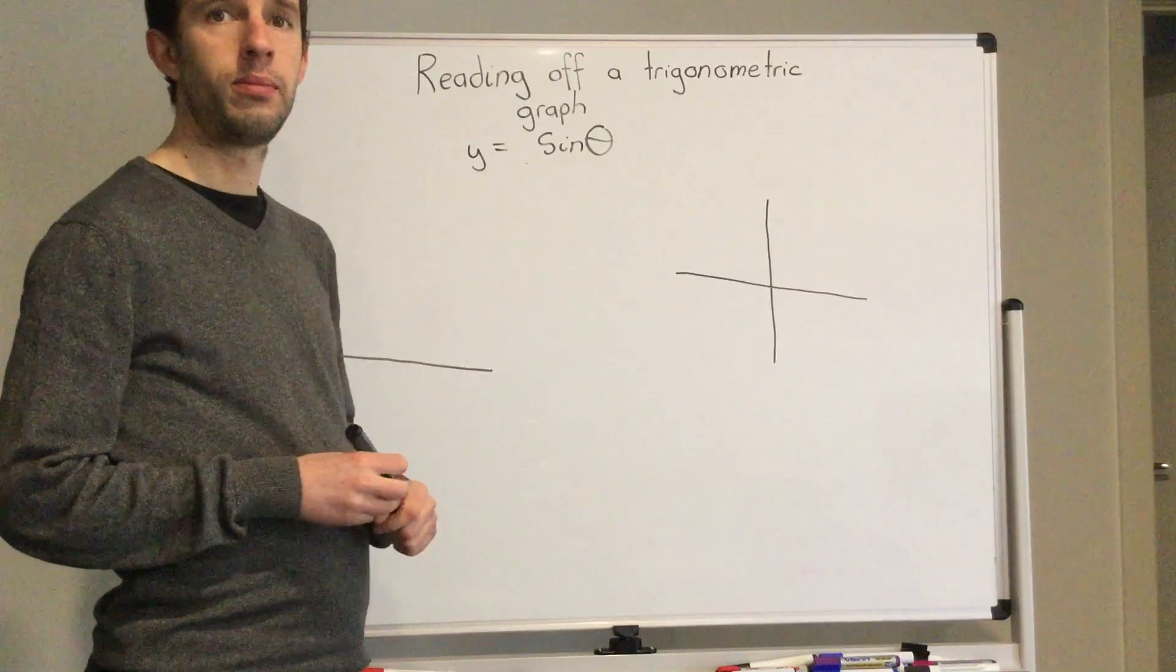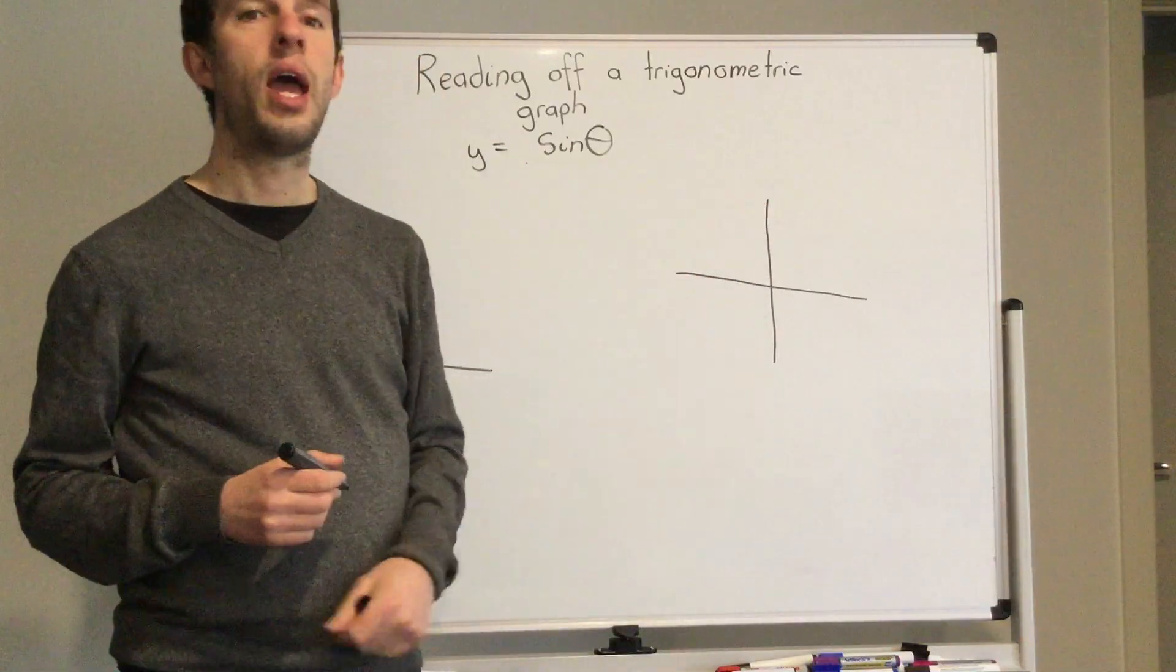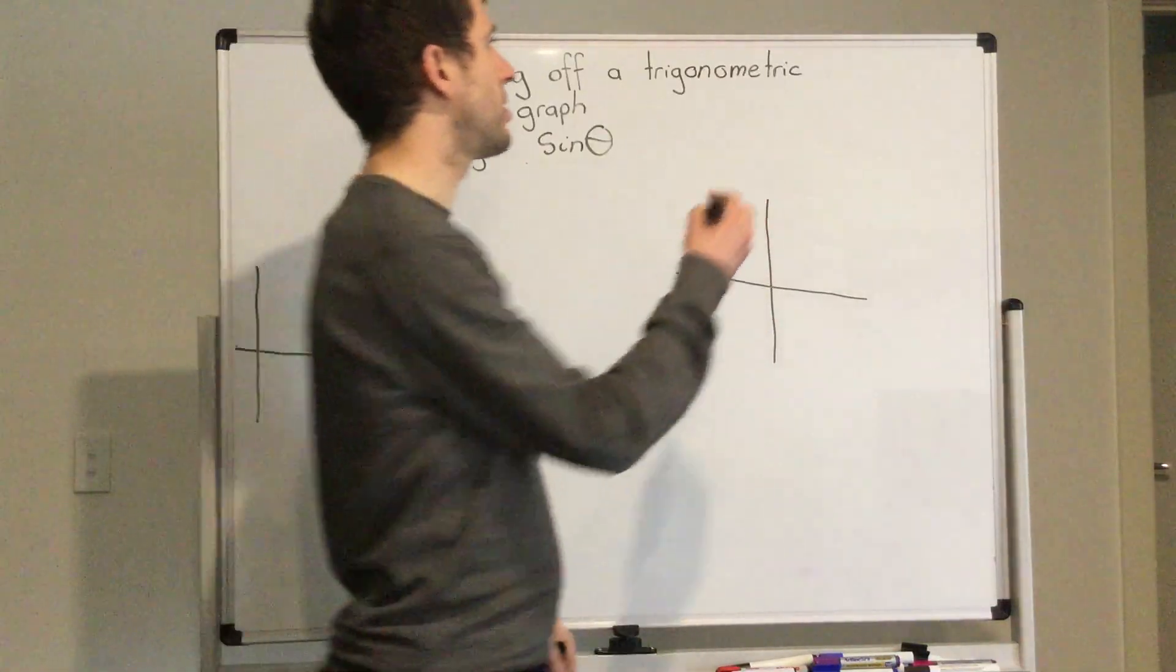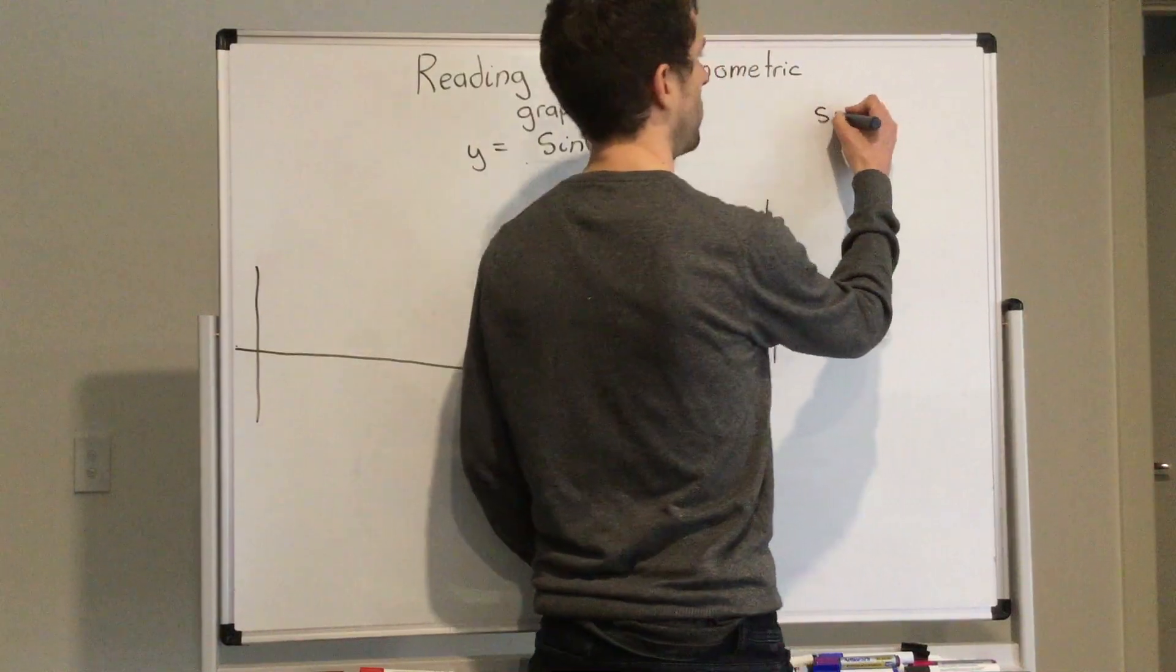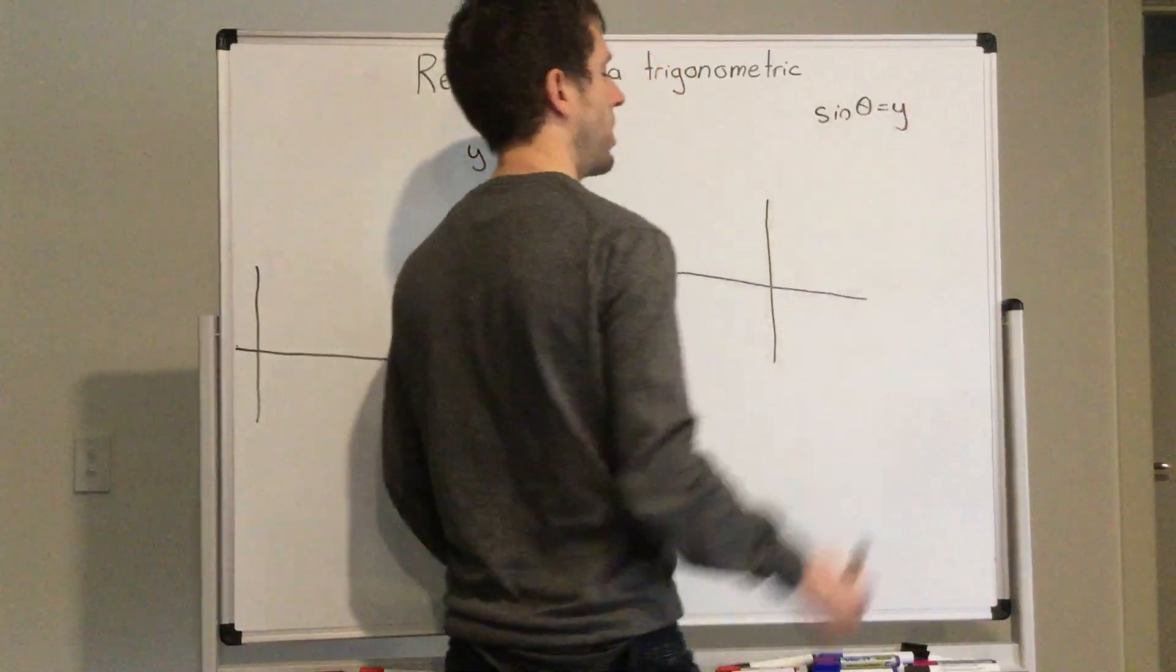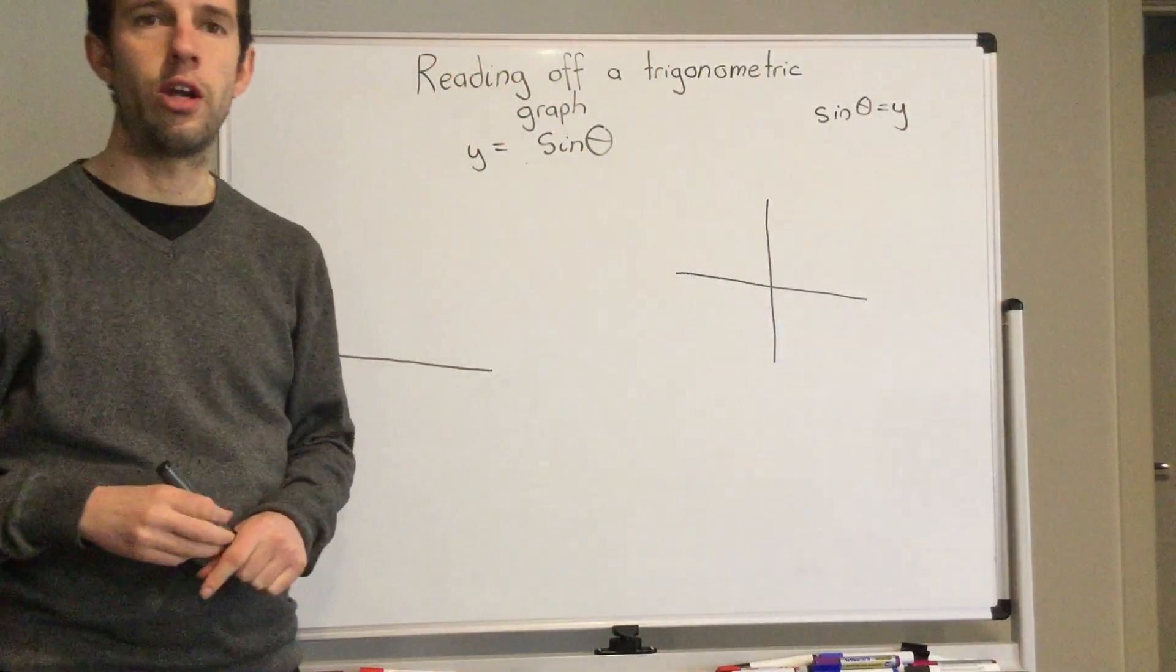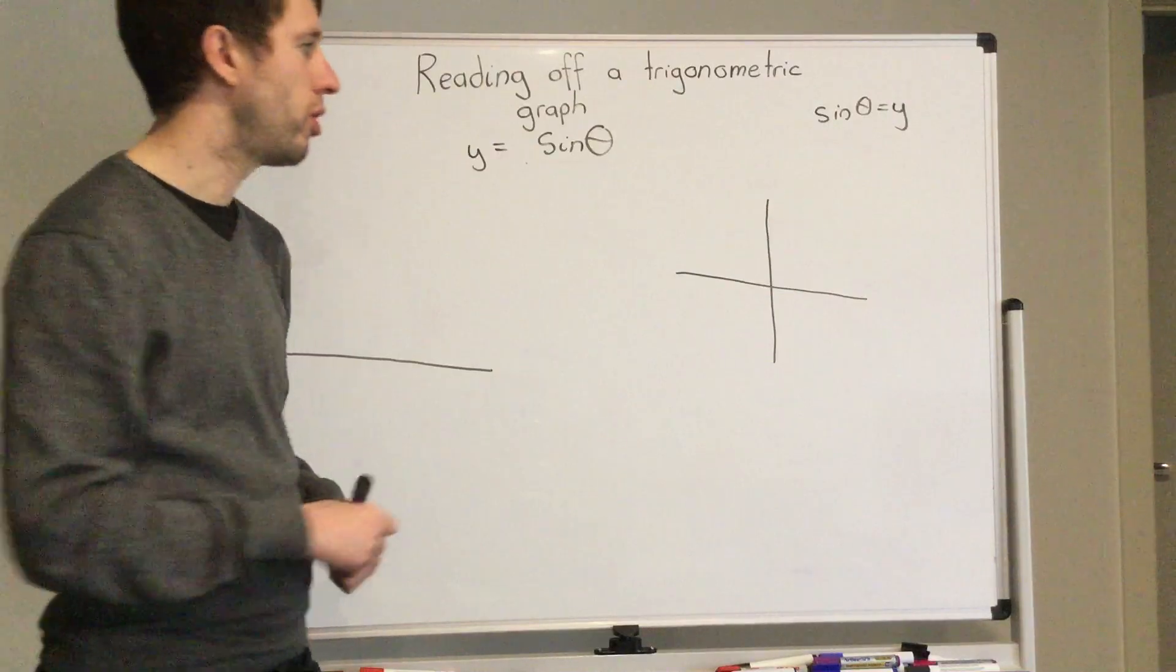So sine is the same as me looking at y. We're going to go around the circle and we're going to break it down into zero degrees, 90 degrees, 180 degrees, and 270 degrees.